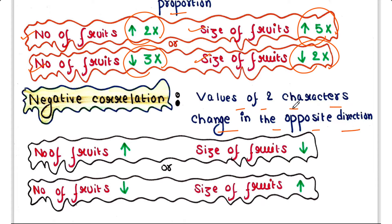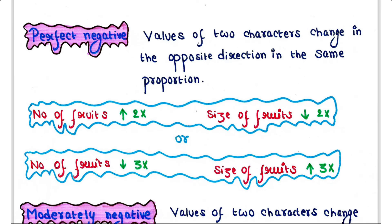Negative correlation: when the values of two characters change in the opposite direction, the relationship is called negative correlation. In our example, number of fruits is increased but size of fruits is decreased after applying the fertilizer, or else number of fruits is decreased but size of fruits is increased after applying the fertilizer.